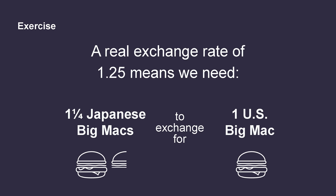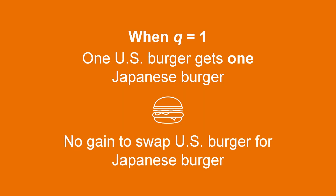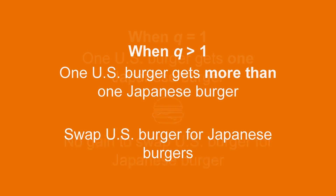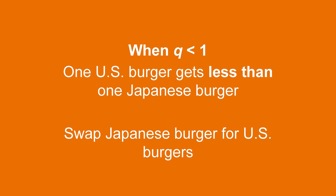Given this numerical example, whose Big Mac is cheaper? Japan's, of course, since we can exchange one US Big Mac for more than one Japanese Big Mac. The real exchange rate is a useful tool to gauge the relative value of goods and determine if there is an arbitrage opportunity. When Q equals 1, the goods are exactly the same value between countries — one Big Mac in the US gets you one Big Mac in Japan, no gain to swap. If Q is greater than 1, one Big Mac in the US gets you more than one Big Mac in Japan, so it's a great deal to swap. Conversely, if Q is less than 1, one Big Mac in the US gets less than one Big Mac in Japan, and the Japanese will benefit if they swap their Big Macs for US Big Macs, because Japanese Big Macs are more valuable.